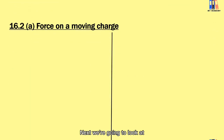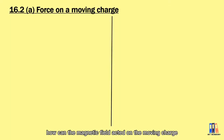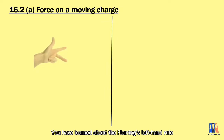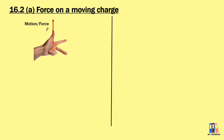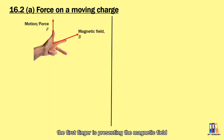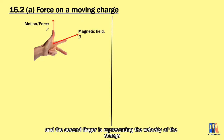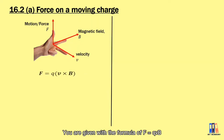Next, we're going to look at how the magnetic field acts on a moving charge. You have learned about the Fleming left-hand rule, where the thumb represents the motion or force, the first finger represents the magnetic field, and the second finger represents the velocity of the charge. You are given the formula F = QVB.